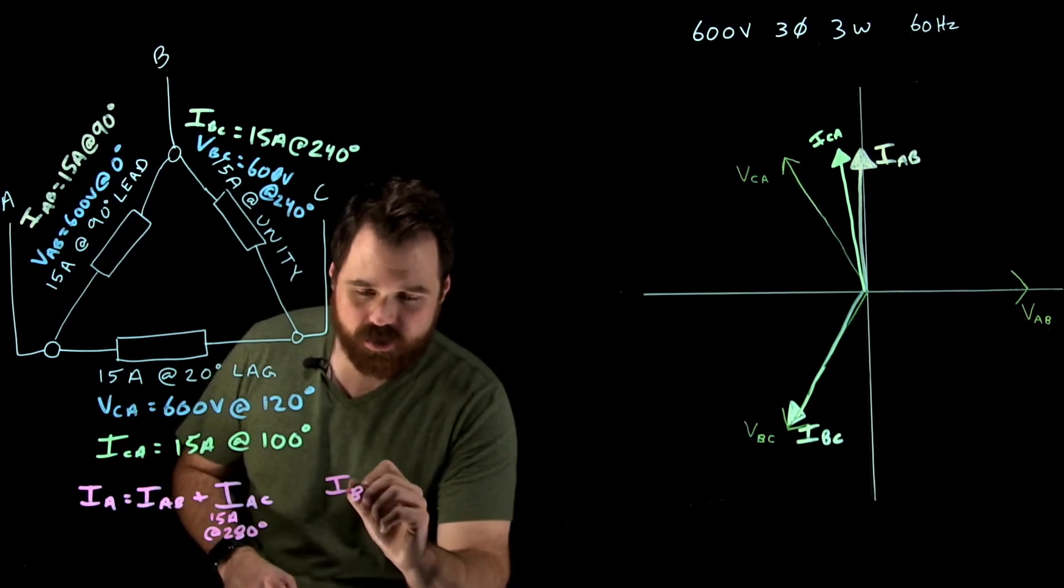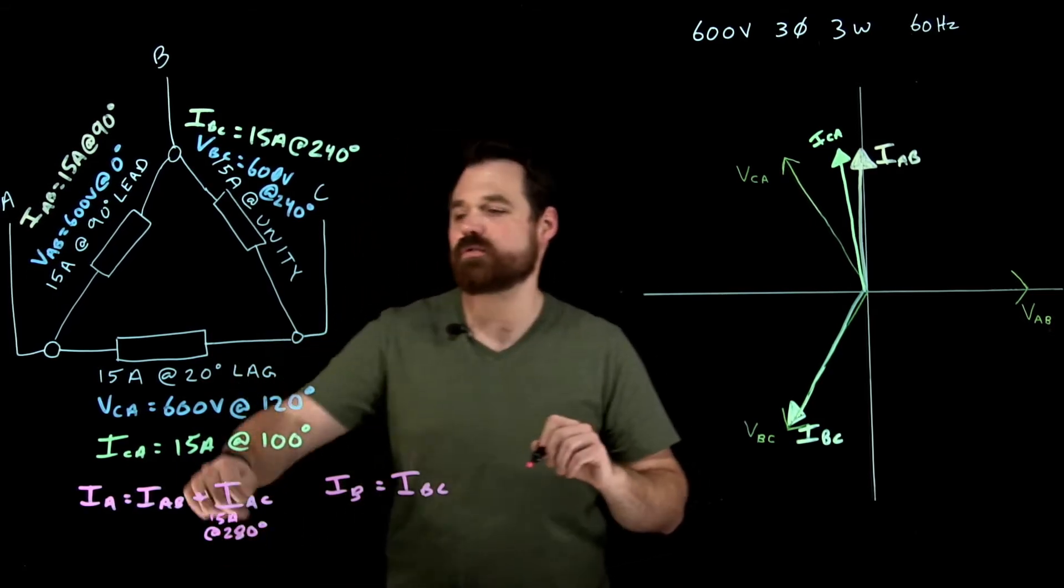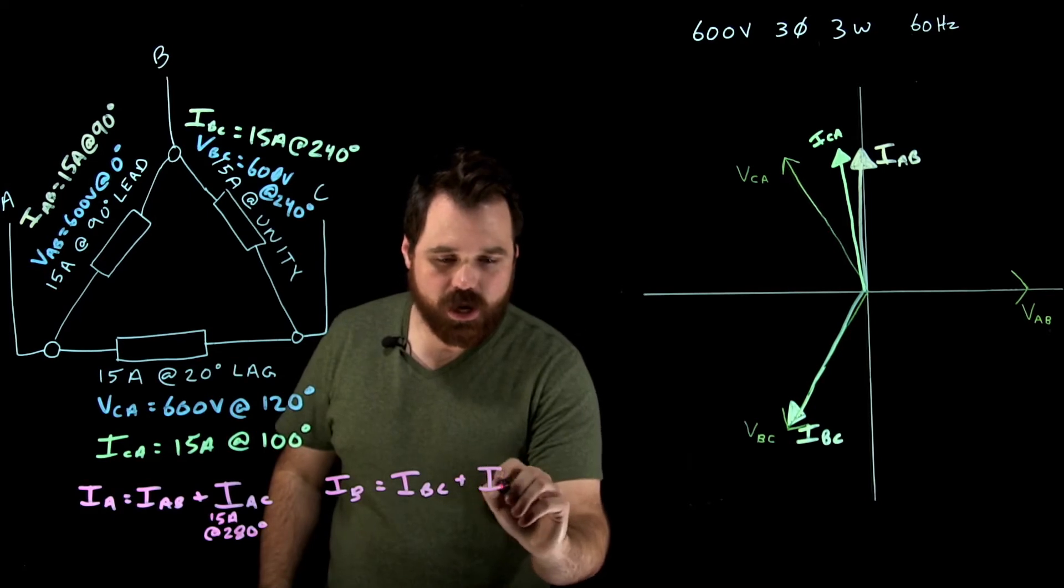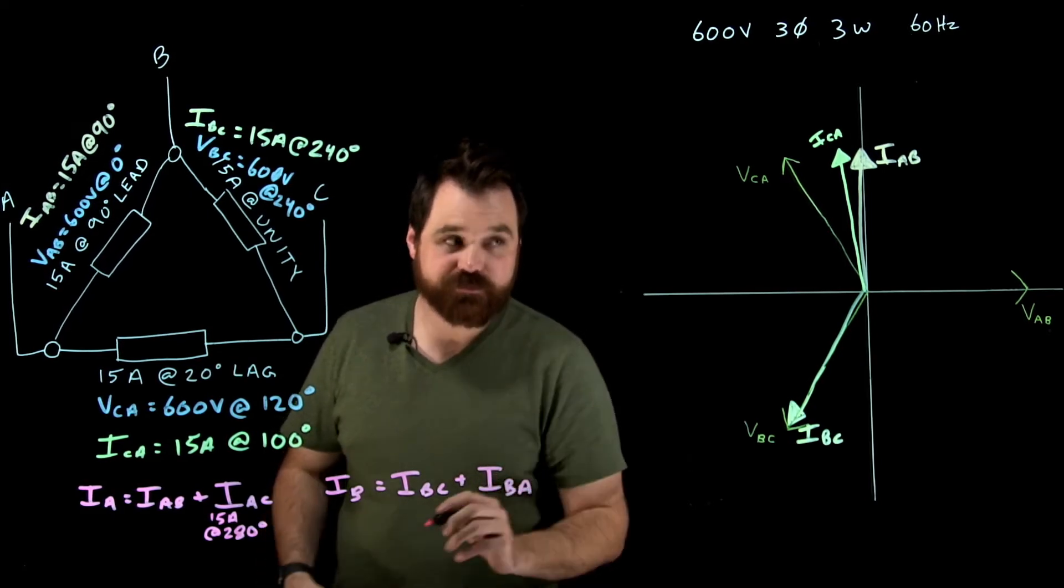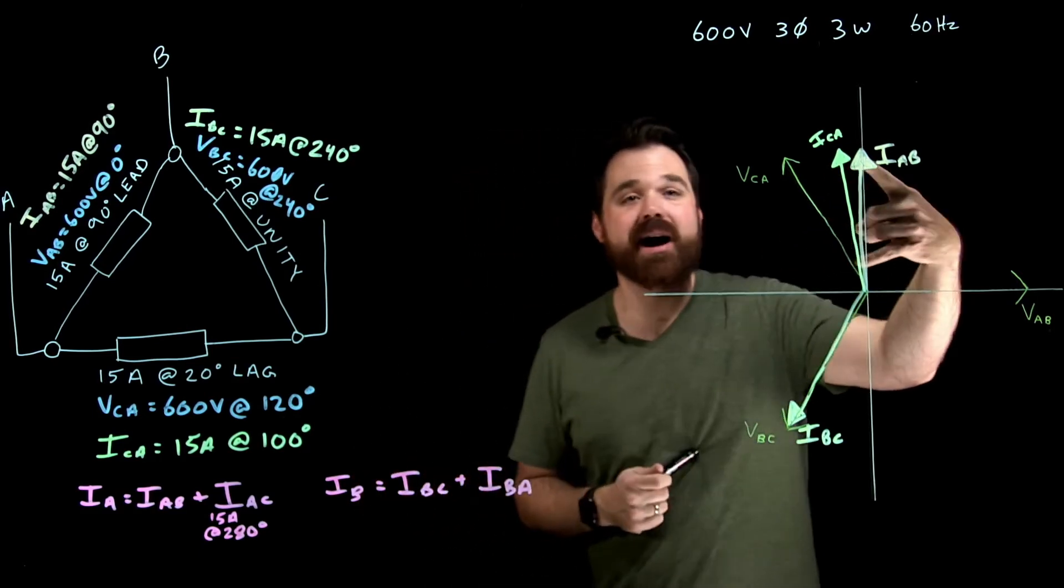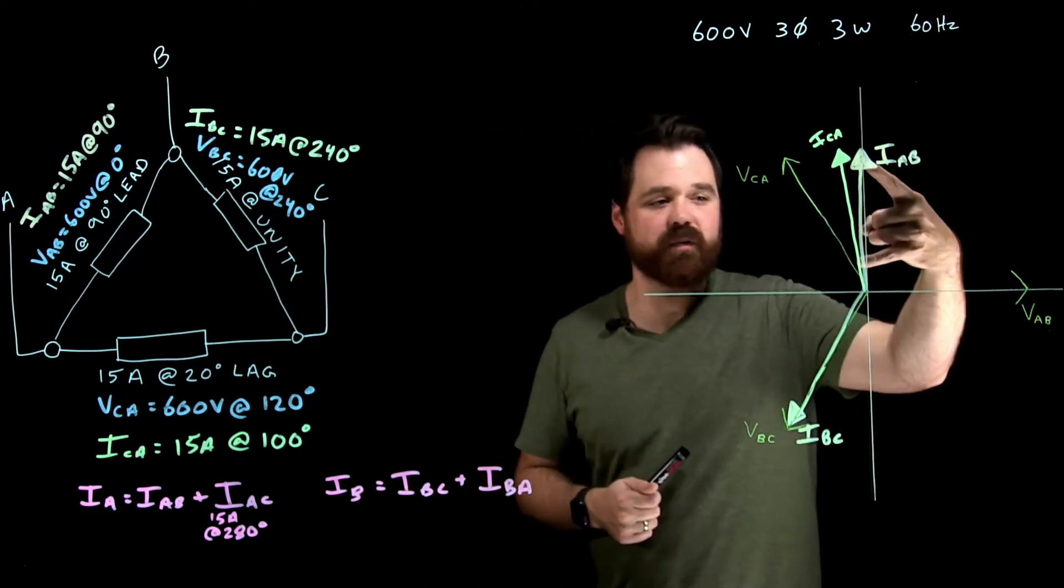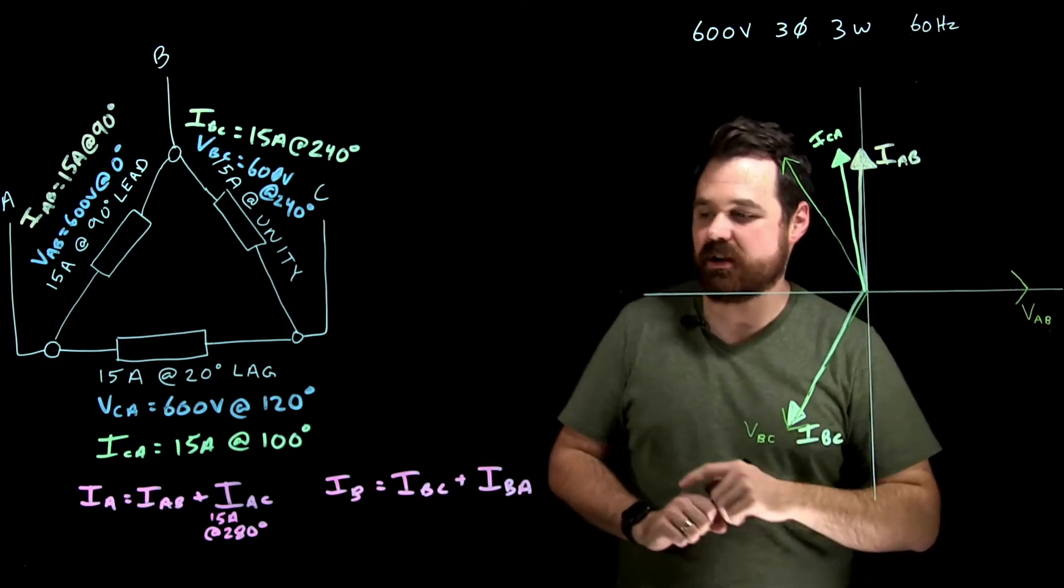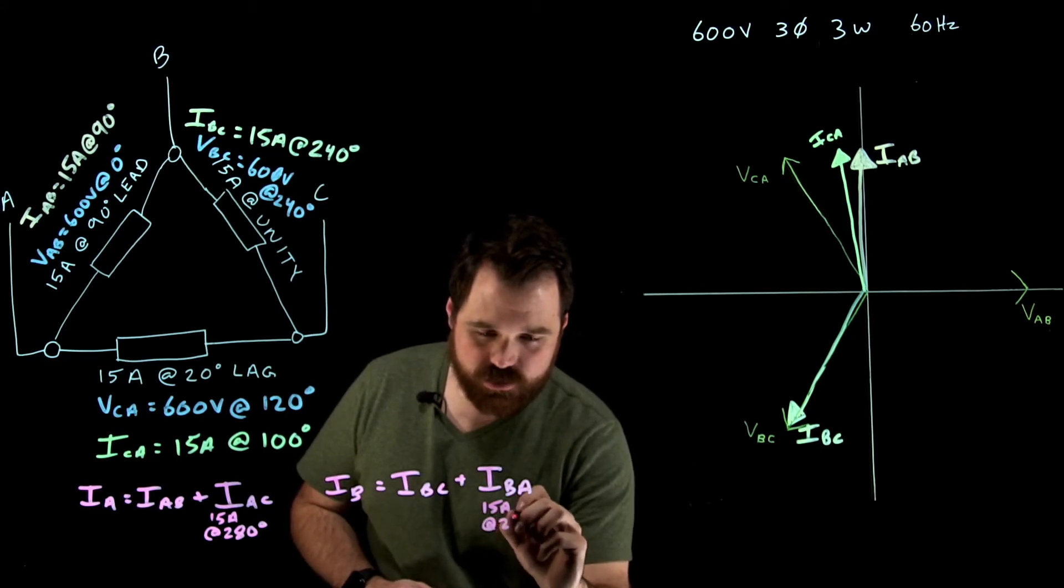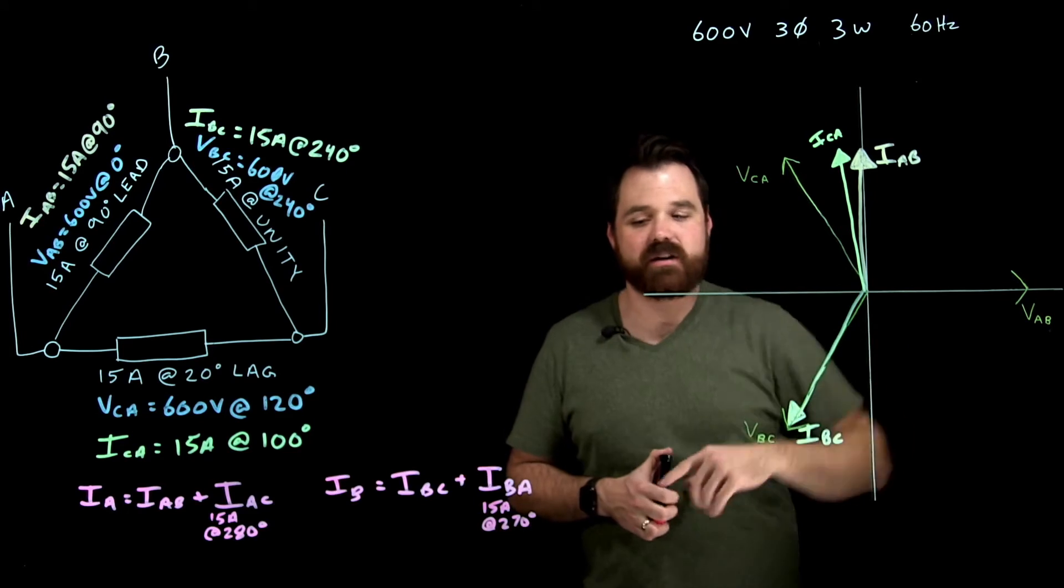IB, we follow a similar process. We go IB to C, which we know is 15 amps at 240, plus IB to A. Now again, we don't have IB to A, we have I A to B. B to A is the inverse of that. So we will flip it 180 degrees, which means B to A is 15 amps at 270 degrees. It is exactly 180 degrees apart.